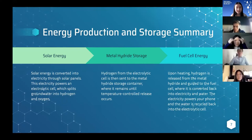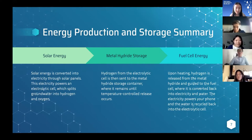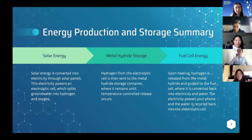Here's a summary of our energy production and storage process. First, solar energy is collected through solar panels. We take that electricity to run an electrolytic cell, which splits water into hydrogen and oxygen gas. The hydrogen is stored in a metal hydride storage container, which when heated releases the hydrogen. That hydrogen is then sent to our fuel cell, where it's converted back into electricity and water. The electricity powers various devices, and the water byproduct is recycled back to the electrolytic cell for further hydrogen production.